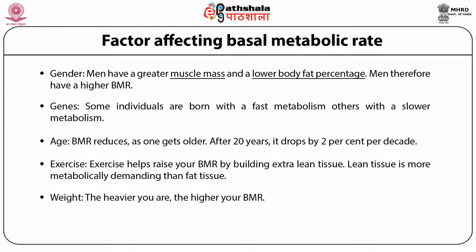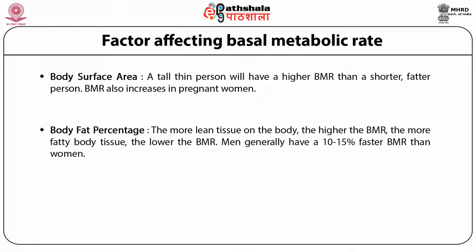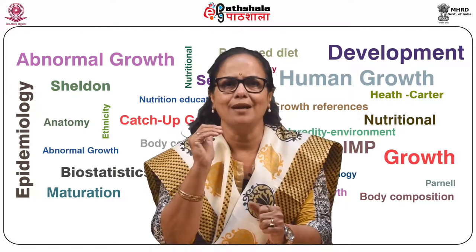Body surface area — a tall thin person will have a higher BMR than a shorter fatter person. BMR also increases in pregnant women. Body fat percentage — the more lean tissue on the body, the higher the BMR; the more fatty tissue, the lower the BMR. Men generally have a 10 to 15% faster BMR than women. Diet — starvation or serious abrupt calorie reduction can dramatically reduce BMR by up to 30%. Restrictive low-calorie weight loss diets can cause BMR to drop as much as 20%, also known as post-prandial thermogenesis.